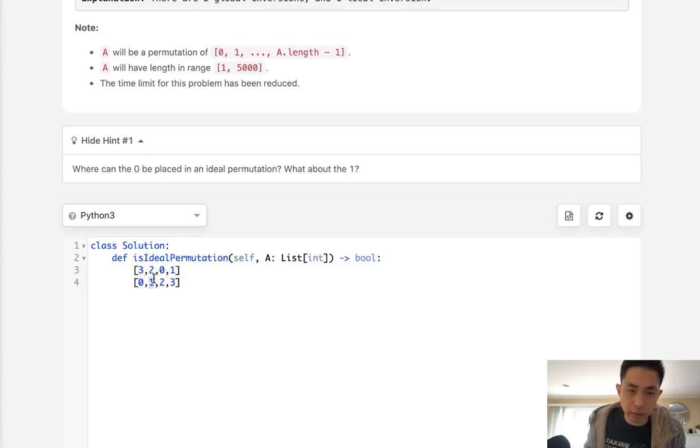Same with here with one we can see the difference is one that would mean this could have more than one global inversion and like if these were flipped say this was one here same thing here with one zero.